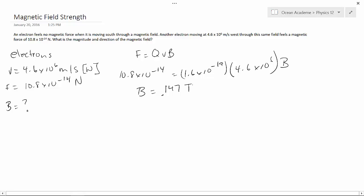Now what direction would that be? Well, one electron felt no magnetic force when it was moving south through the magnetic field. The other electron was moving west, and it did feel a magnetic force.